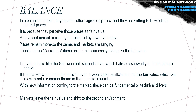What is a balanced market? In a balanced market, buyers and sellers agree on prices they're willing to trade at, because they perceive these prices as fair value. A balanced market is usually represented by lower volatility — prices remain more or less the same and markets are ranging. Using market profile or volume profile, we can recognize fair value, which looks like a Gaussian bell-shaped curve. If the market were in balance forever it would just oscillate around fair value, but new information — fundamental or technical — drives markets to leave fair value and shift to an imbalanced environment.